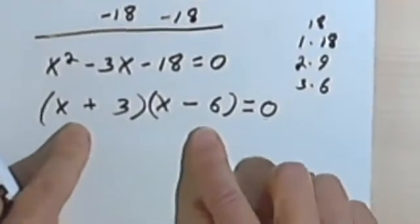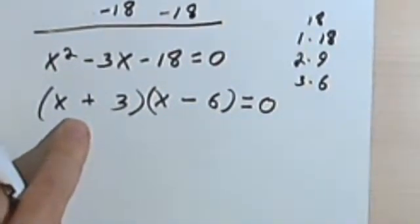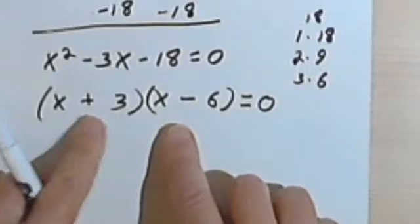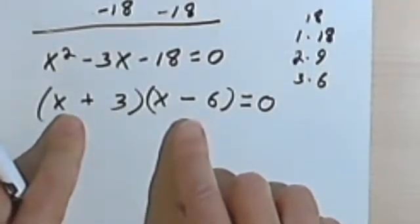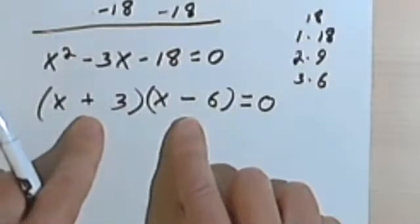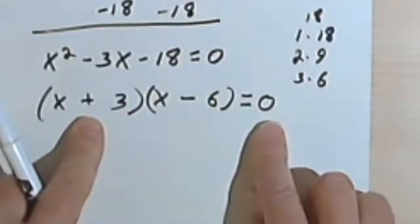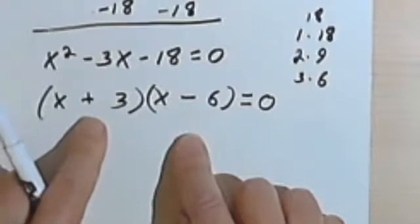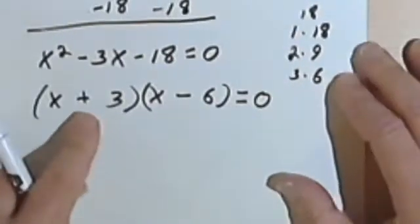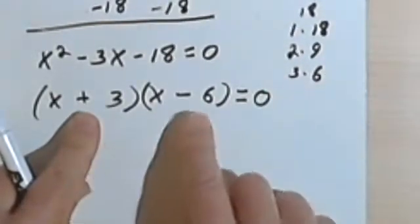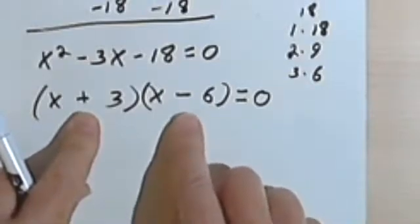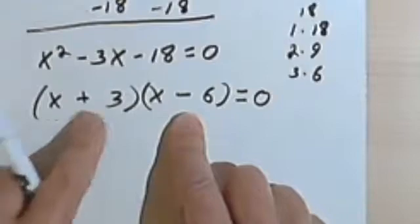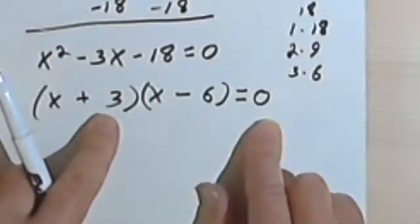Now, at this point, what you have to realize is that if I've got two things, let's say these two binomials, and I multiply them together and they equal 0, then at least one of them has to equal 0. In other words, if x plus 3 equals 0, then 0 times x minus 6 is going to be 0. And if x minus 6 equals 0, then x plus 3 times 0 will give me 0.